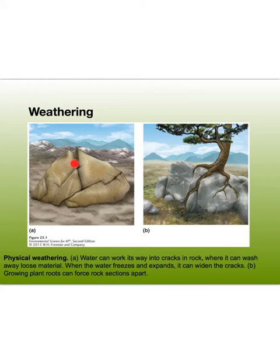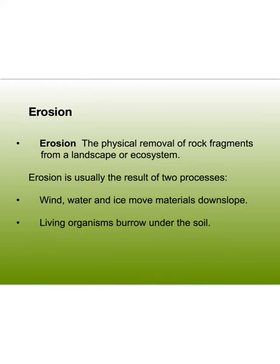Ice expands when it freezes and condenses when it melts. Erosion is the physical removal of rock fragments from a landscape or ecosystem, usually a result of wind, water, or ice moving material down a slope. Keep in mind that the topography — the shape of the landscape — is going to play a role in the way soil forms. Living organisms that burrow under the soil are also very important, especially when we get into the different layers.